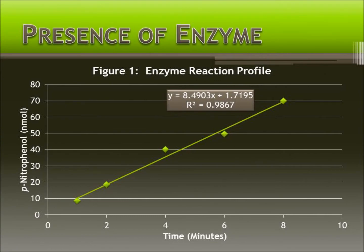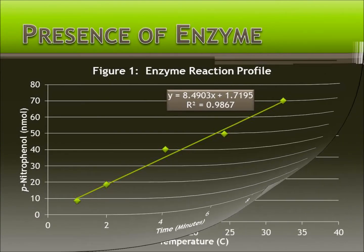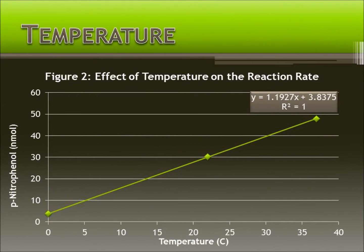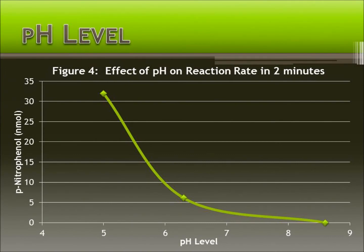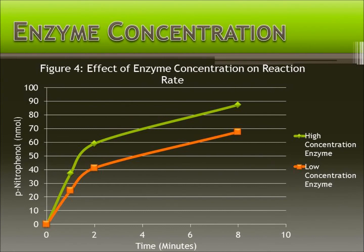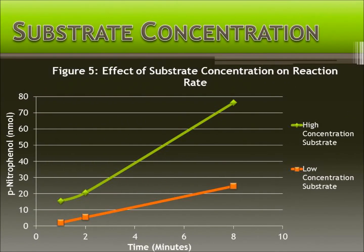The enzyme generates p-nitrophenol at 8.5 nanomoles per minute. Every Celsius degree, there is a 1.2-fold increase in p-nitrophenol production. There is an exponential decrease of enzyme activity as the pH increases. Higher enzyme concentration increases the initial reaction rate; however, additional p-nitrophenol is not created. A high substrate concentration increases both the initial reaction rate and p-nitrophenol production.